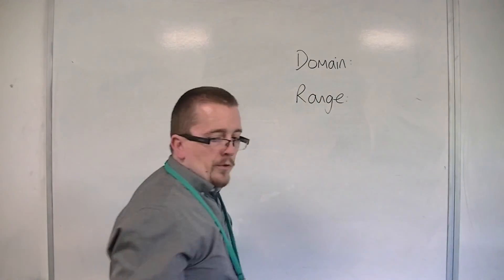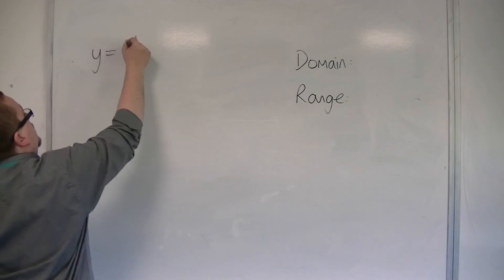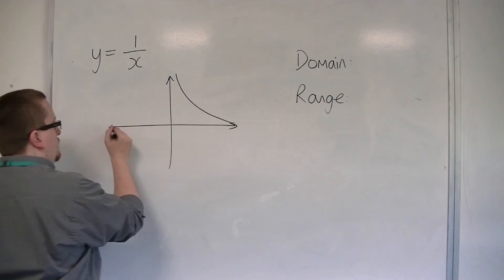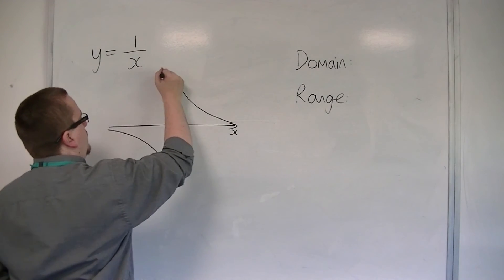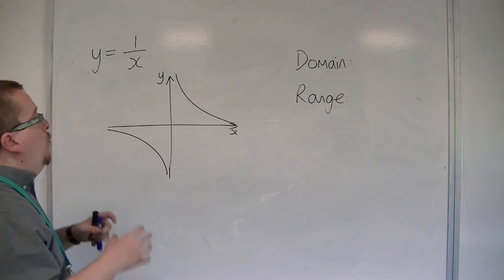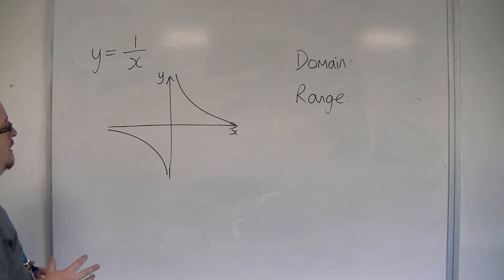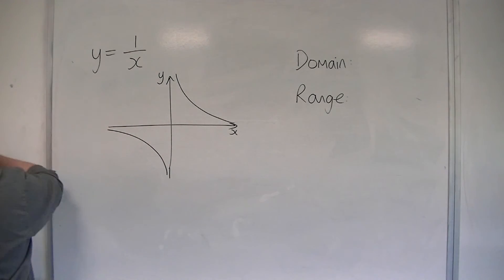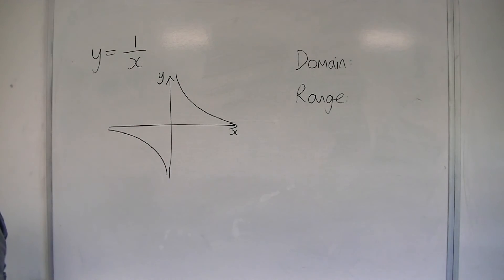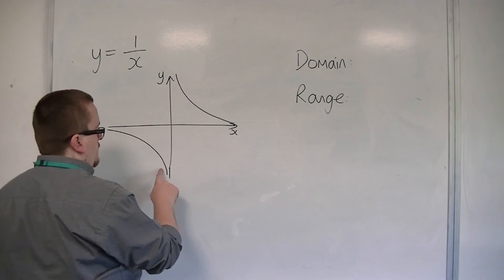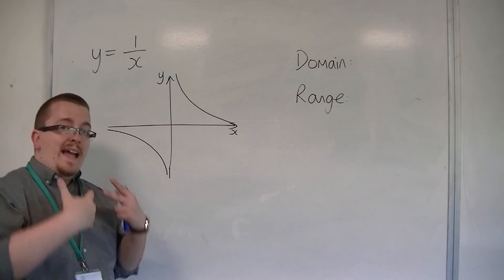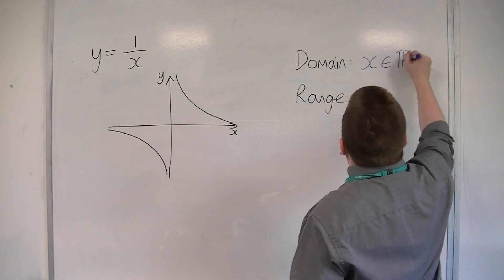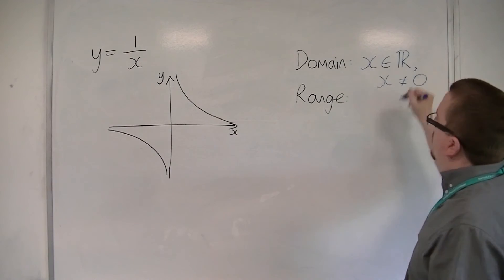Let's say I was looking at y is equal to 1 over x. You should remember how to sketch this. Now, if you're talking about the domain — which values of x can this curve take — you know that the curve is just going to keep on getting closer and closer to the x-axis in both directions. There are no breaks in the line either side of the y-axis. However, there is a break when x is 0. I cannot have the value of 0. And so, I can say that x can be any real number you like, but it cannot be equal to 0.